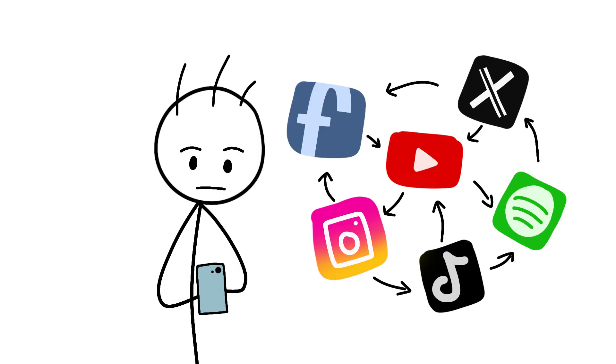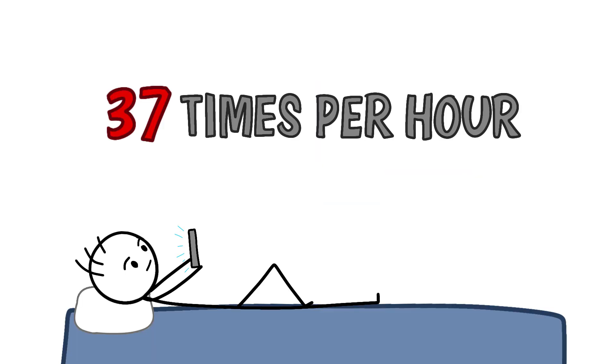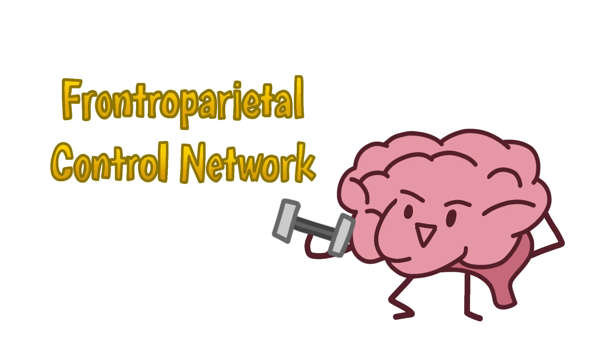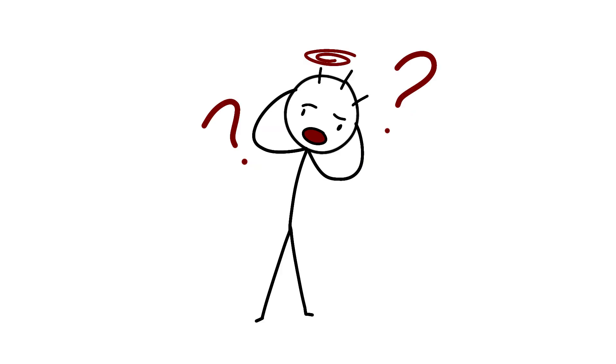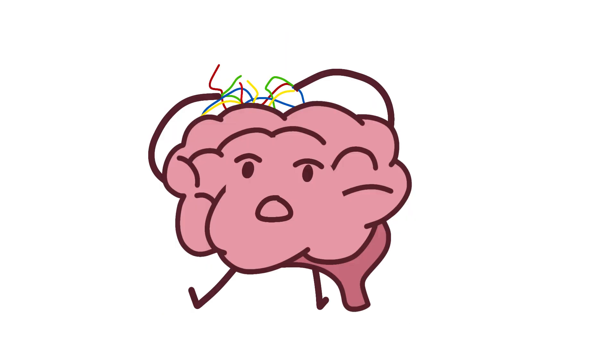What smartphones actually do is increase task switching frequency. The average teenager switches between apps 37 times per hour. Their brains adapt by strengthening the frontoparietal control network, the same region that air traffic controllers have super developed. These kids aren't losing focus. They're becoming neural multitasking machines. Whether that's good or bad is a different question, but their brains are literally rewiring for rapid context switching.